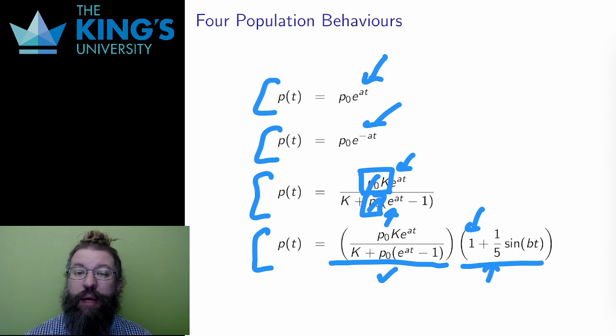Multiplying a stable limit by this means that the limit will oscillate. So this population doesn't approach any value, but oscillates around k with an amplitude of k over 5. This might be a population with seasonal variation, or some other behavior which ebbs and flows over time.